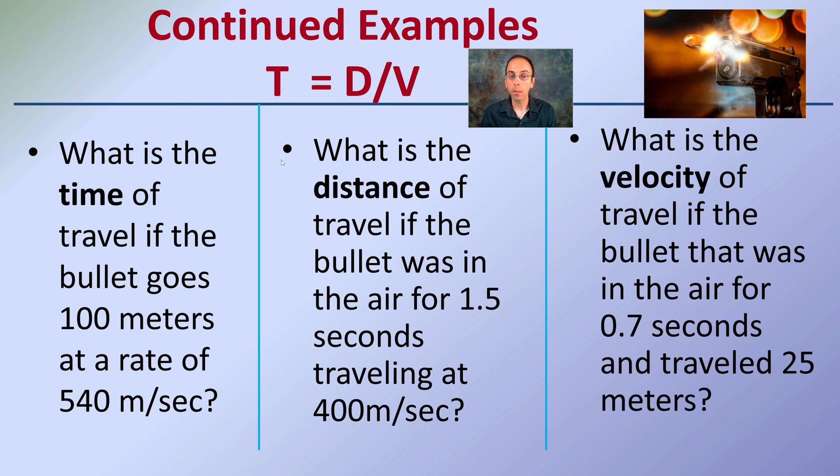The second example is, what's the distance of travel if the bullet was in the air for 1.5 seconds? So I give you T in this case, traveling at 400 meters per second. That's the velocity. So in that case, you need to solve for D. Here, you need to solve for V. What is the velocity of travel if the bullet that was in the air for 0.7 seconds and traveled 25 meters? What was the velocity?